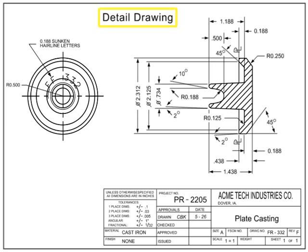A detail drawing is a drawing that contains all the information required for a specific part. There are many different ways a part can come into existence, including casting, machining, welding, purchasing a part, or even modifying an existing part.